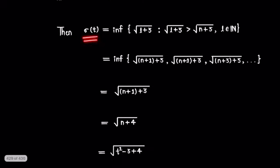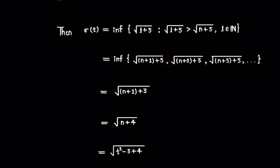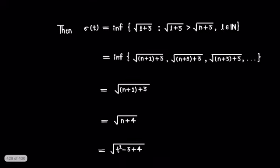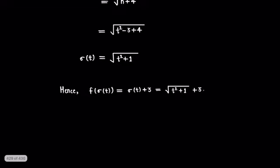Now, σ(t) = infimum of the set of all elements of the form √(n + 3) such that √(n + 3) is strictly greater than t, where n is some natural number. This set contains all numbers of the form √(n+1+3), √(n+2+3), √(n+3+3), and so on. Clearly its infimum is √(n+1+3) = √(n+4). Replacing n with t² - 3, we get σ(t) = √(t² - 3 + 4) = √(t² + 1).